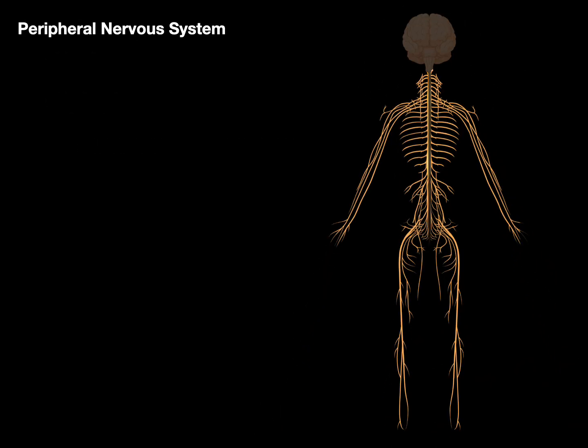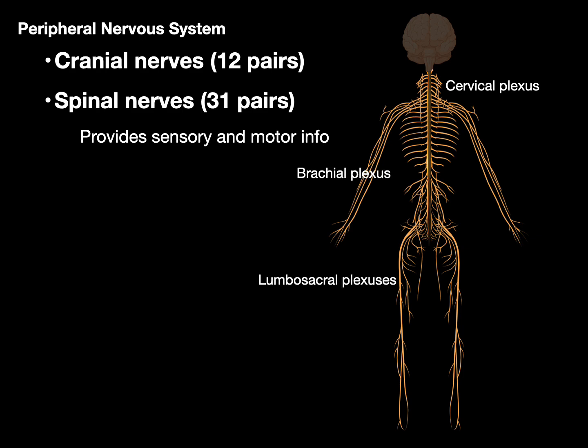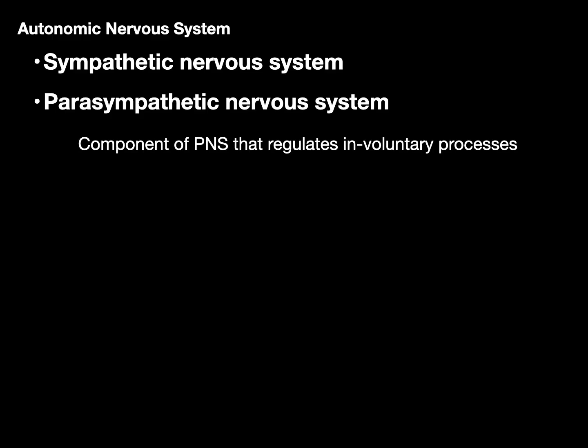We also have the peripheral nervous system, which consists of 12 pairs of cranial nerves and 31 pairs of spinal nerves. This is what actually provides the sensory input and motor output information through nerves of the cervical plexus, brachial plexus, and lumbosacral plexus. Any nerve you think of — like the median nerve or sciatic nerve — is part of this peripheral nervous system. We also have the autonomic nervous system, or ANS, which includes the sympathetic and parasympathetic nervous systems, a component of the PNS that regulates involuntary processes.